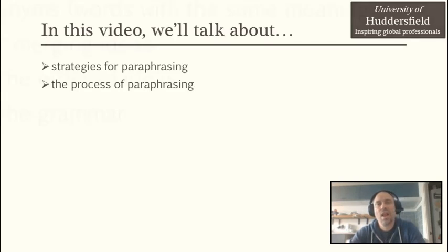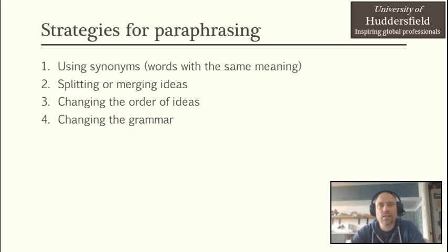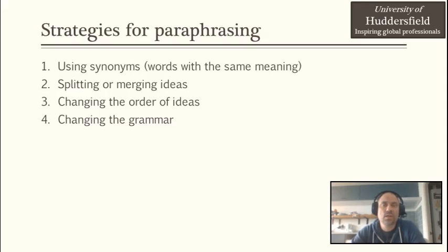So let's start with the strategies first. Generally speaking, there are four strategies that the literature cites regarding paraphrasing. The first one is using synonyms or words with the same meaning. Second, splitting or merging the different ideas. Third, changing the order of ideas, and finally changing the grammar. So these are the main strategies that the literature suggests, and we are going to go through them one by one.